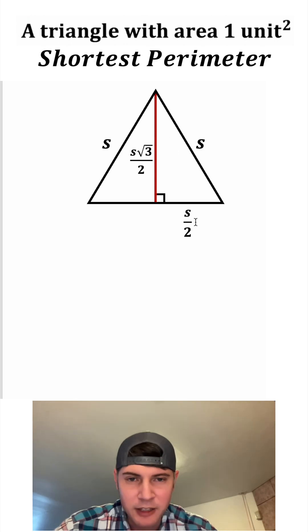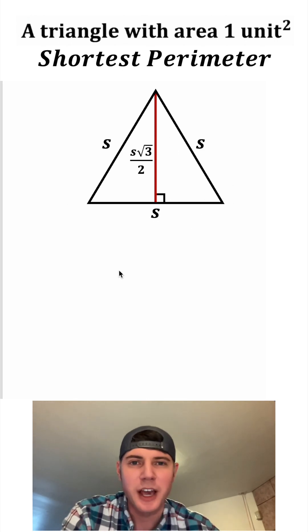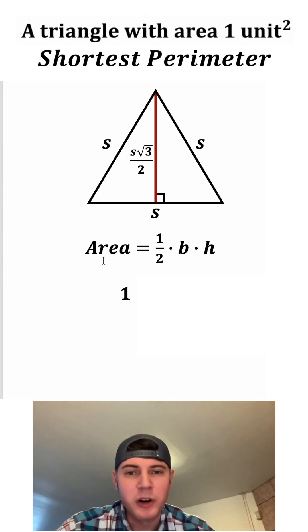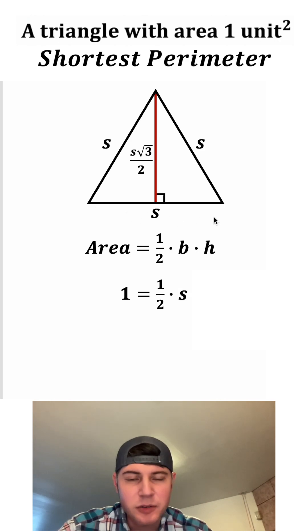Let's get rid of these two angles and let's change this to the entire base, which is S. The area of this triangle right here is gonna be one half base times height. Let's plug in one for the area. Let's copy down the one half. The base is gonna be this S right here and the height is this S root three over two.